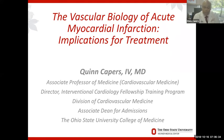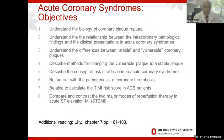So there are some objectives for the lecture: to understand the biology of coronary plaque rupture, the relationships between the pathological findings and what's happening clinically with the patient. Number three, understand the differences between the stable and the vulnerable coronary plaques. Number four, how do we change that vulnerable plaque prone to rupture — how do we calm it down and change it to a stable plaque? Describe the concept of risk stratification, be familiar with the pathogenesis of thrombosis, be able to calculate risk score in patients with acute coronary syndromes, and compare and contrast two major modes of therapy in acute ST elevation myocardial infarction.